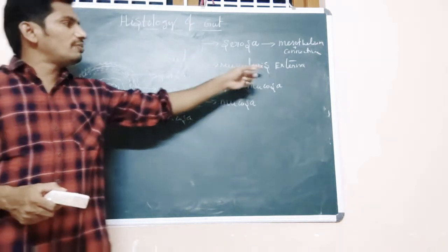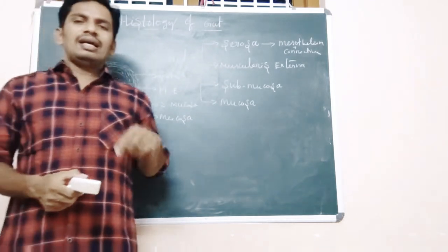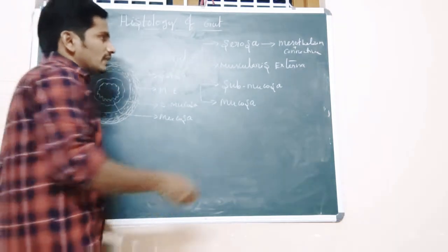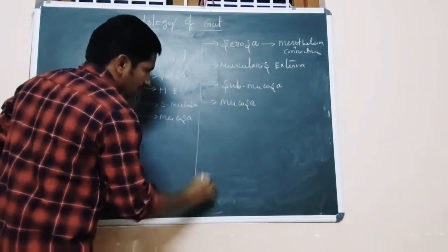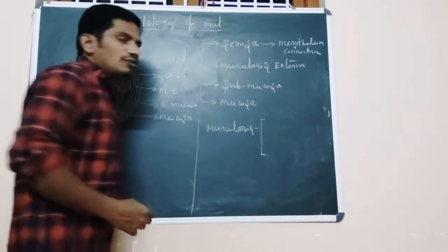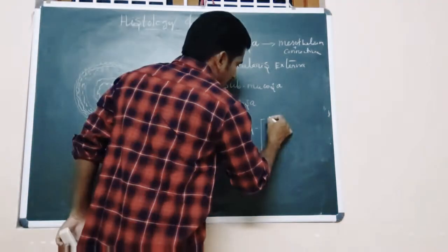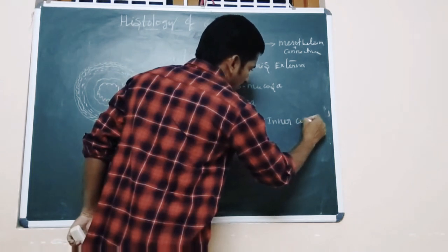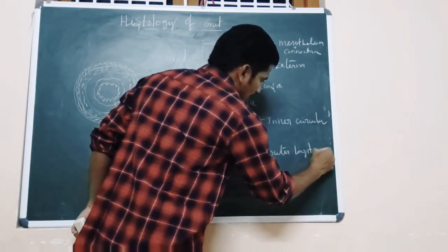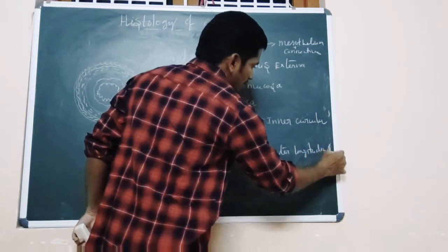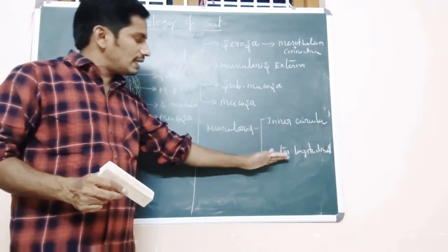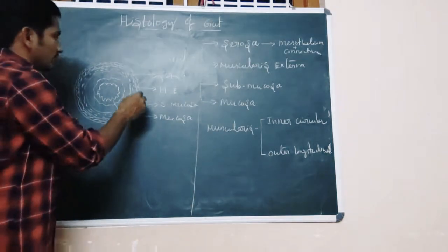The smooth muscles of the muscularis externa are the longitudinal muscles and circular muscles, and in some places we can also notice oblique muscles. Muscularis externa has two muscle layers: the inner one is the circular muscle and the outer one is the longitudinal muscle. Both are made up of smooth muscle only.